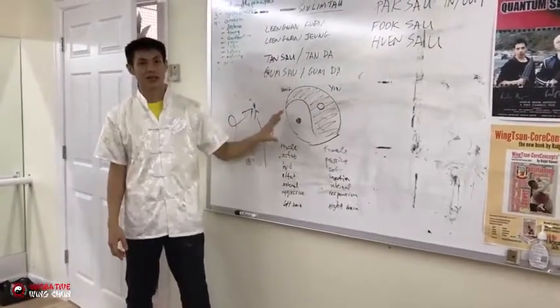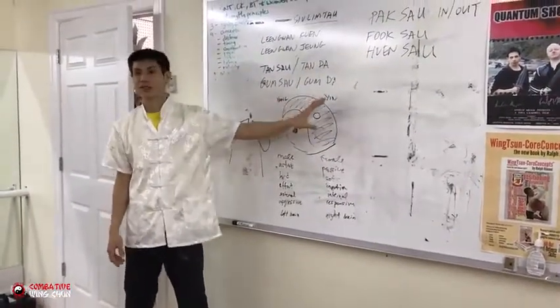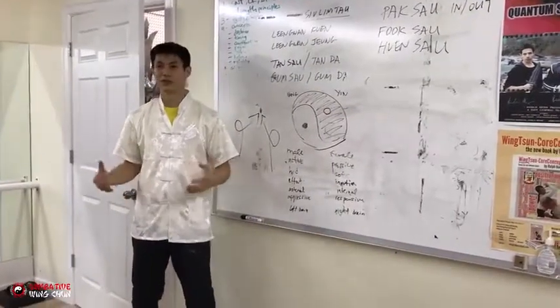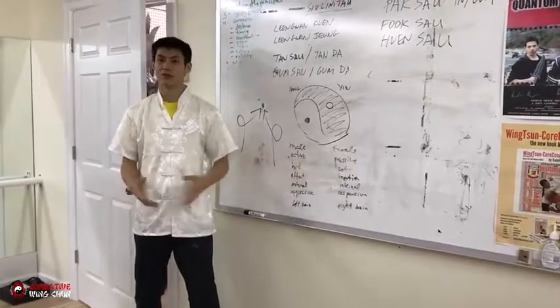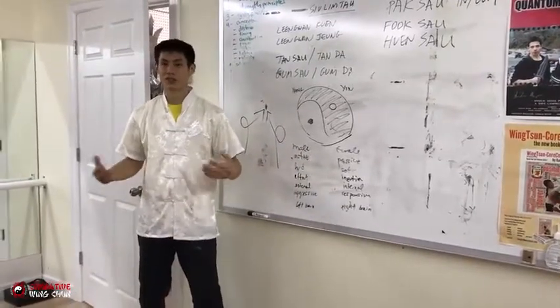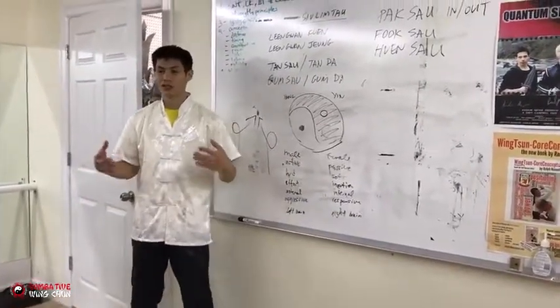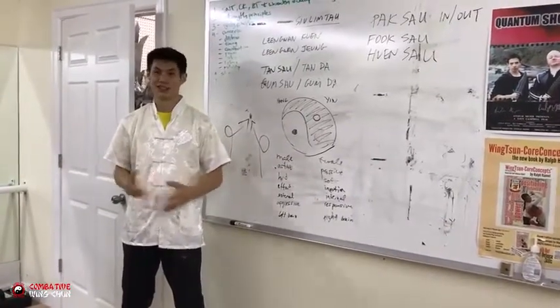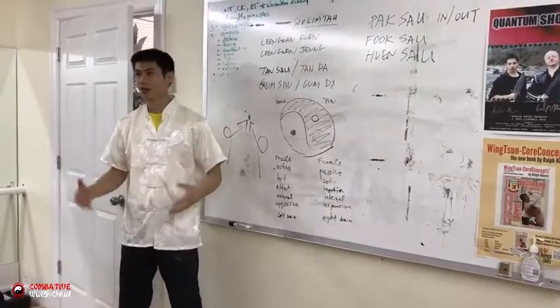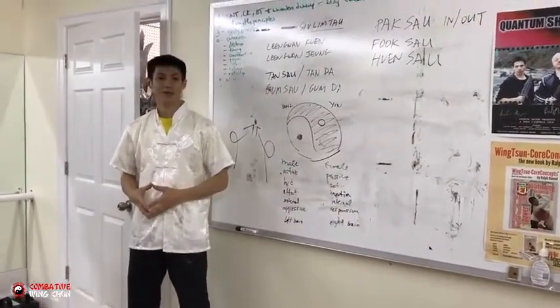So we teach the yang way, and then over time, the yin starts to sink in. The female and the feminine starts to sink in. The softness, using the momentum instead of force, starts to generate, starts to sink in. It takes a longer time. It's like marinating something that you're cooking. You can't just microwave it. You've got to take time to cultivate it.